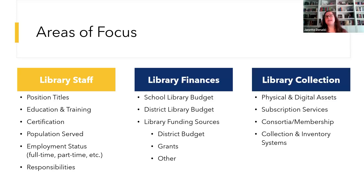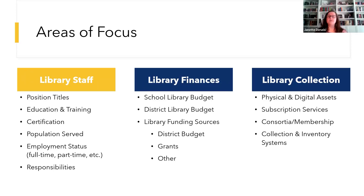Now that you know where the data comes from, I'd like to discuss how we're using it. This slide shows our three main areas of focus: staff, finances, and collection. Before I dive in, it's important to emphasize the motive here. All the data we're collecting about school library staff is in no way intended for any nefarious use. We've received a few concerns that it could be used to identify libraries not following protocols or meeting expectations. But I want to reassure you that our project takes a positive view of school library professionals — we are not interested in conducting any research that negatively impacts school libraries. As a library organization, our aim is to get a clear picture of the status of school libraries in our state so that we can provide support and advocate for increased and equitable access to information and resources for all students.